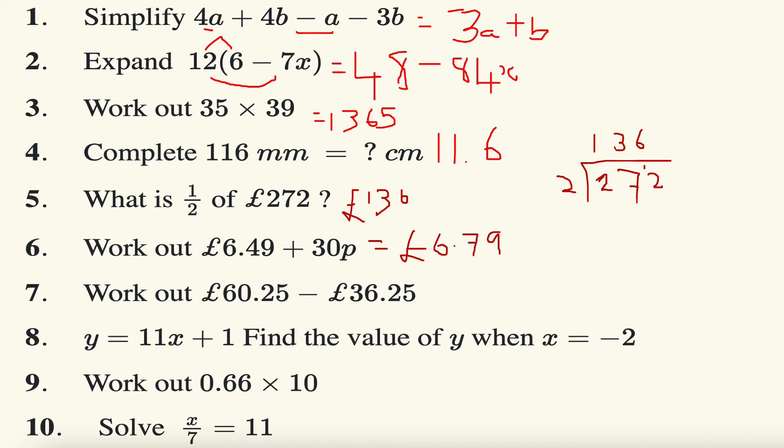The next question: work out 60 pound 25 pence minus 36 pound and 25 pence. Well, 25 pence take away 25, that's going to be zero, so I'm doing 60 take away 36. Well, 60 take away 30 is 30 minus the six pounds becomes 24 pounds. So it's subtracting money. If you're unhappy with that, feel free to go ahead and use the column addition.